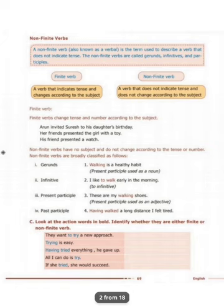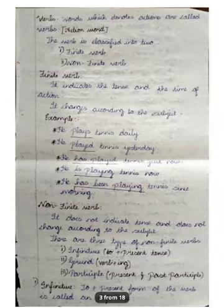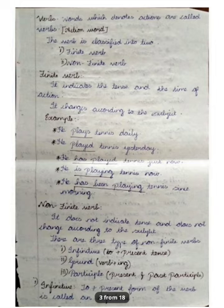Non-finite verbs never change as per the subject and have no tense form — they never denote tense. Non-finite verbs are broadly classified as: gerund, infinitive, present participle, and past participle. Non-finite verbs do not indicate tense and do not change according to the subject. The three types are infinitive, gerund, and participle.